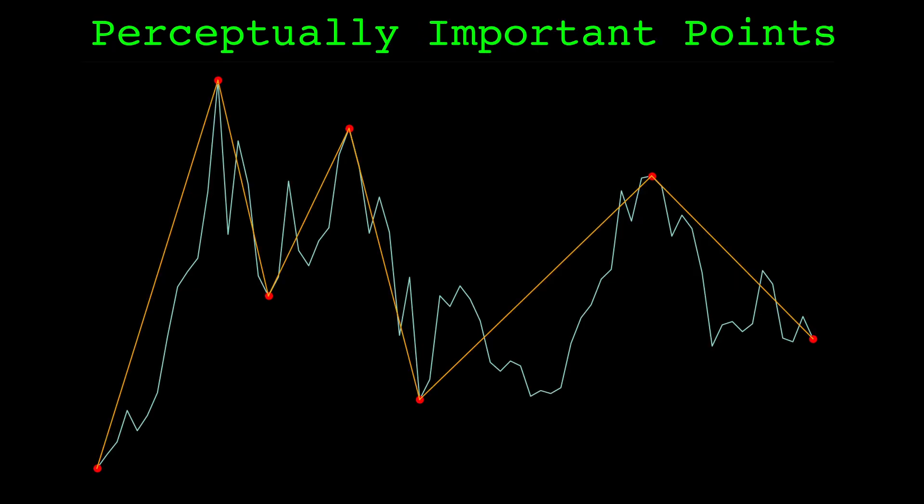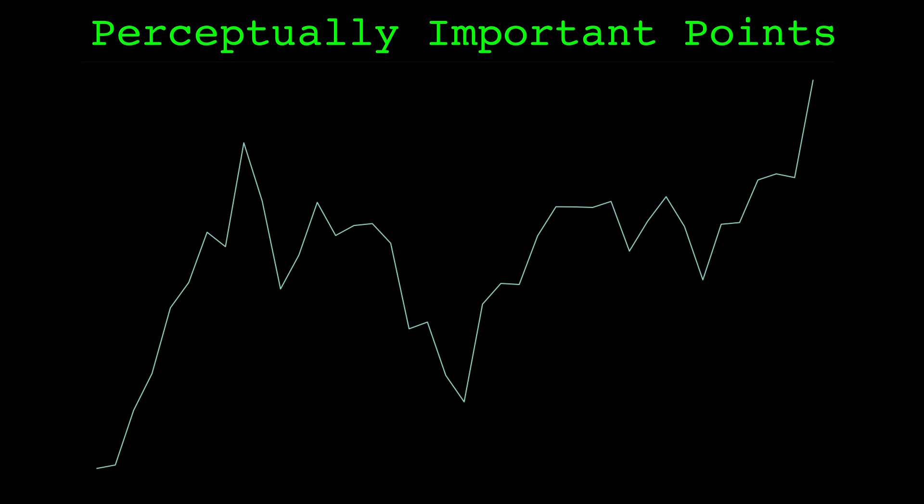Our third algorithm is perceptually important points. This algorithm is given a section of price data and a number of points to find. Let's look at an example. Here's a section of price data. We will find five perceptually important points. The first two are always the first and last points in the data.